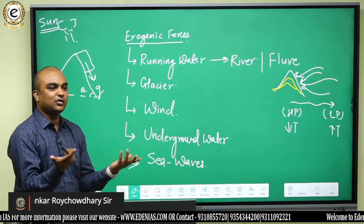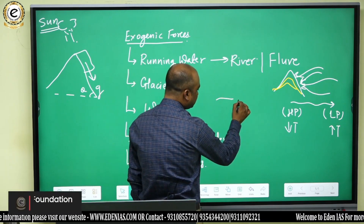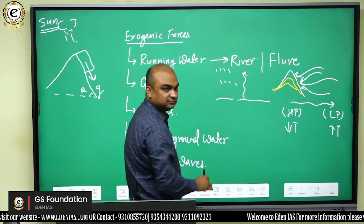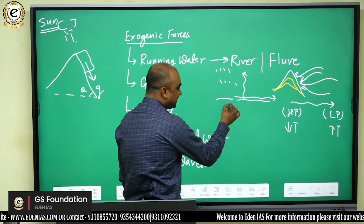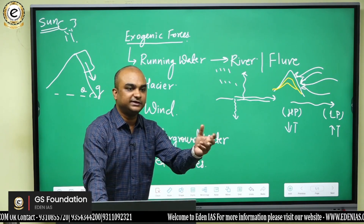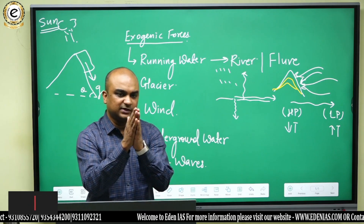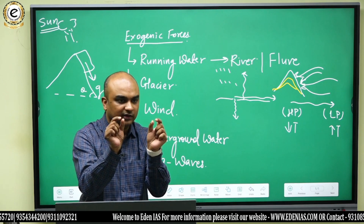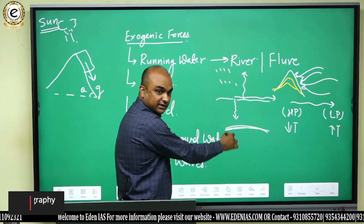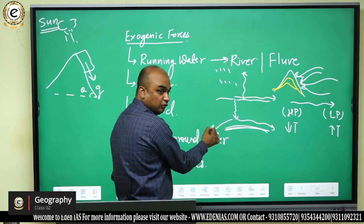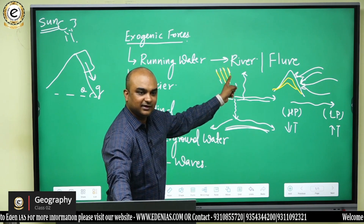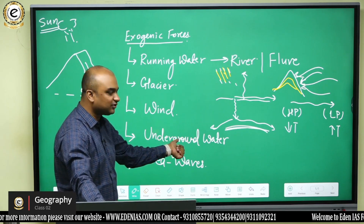Underground water: when there is a rock structure and rainfall occurs over it, some water evaporates, some flows across the surface, and the rest percolates into the ground. This percolation is dependent upon the permeability and porosity of the rocks. After a certain depth the water cannot percolate further and starts flowing horizontally depending on the slope — this is how underground water is generated. Since it ultimately comes from rainfall, the ultimate source of energy here is also the sun.